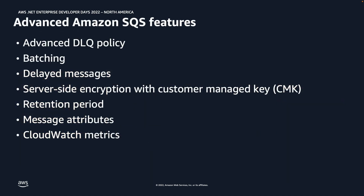Now let's talk about some advanced SQS features. First is a dead letter queue policy. Things do go wrong, and we should plan for that when designing software architecture. This is where dead letter queuing comes in: if a consumer was not able to process a message, instead of doing endless retries, you can take advantage of dead letter queuing. Secondly, for enhanced throughput, you can use batching to send and receive messages in batches.